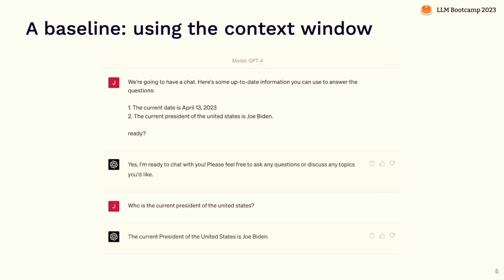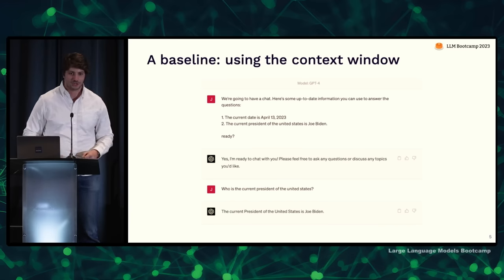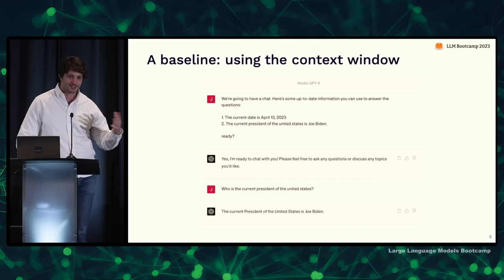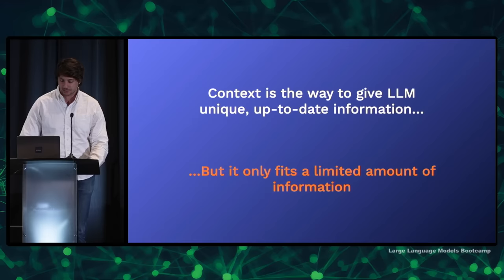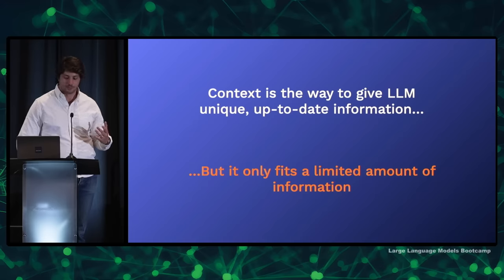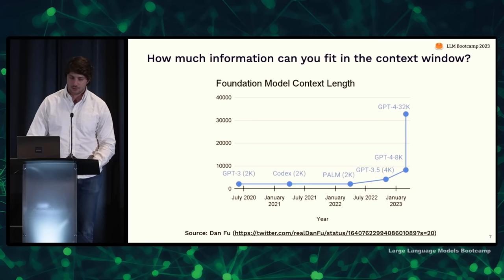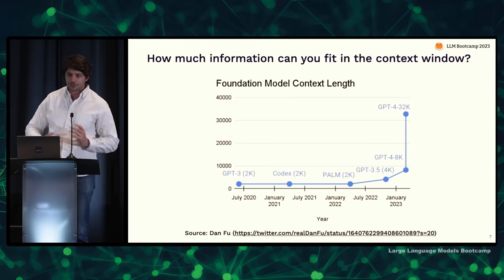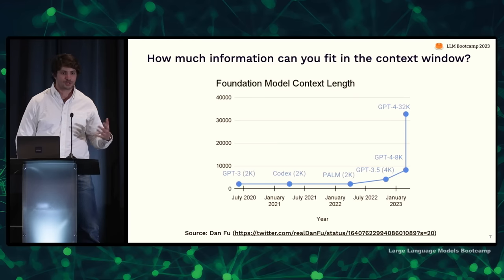The analogy here is: if the model by itself is you in high school, putting data in the context window is like when your teacher told you that you're allowed to bring a cheat sheet into the exam. You have this limited scratch pad where you can give this smart but not knowledgeable high school student access to the information it needs to answer the exam questions. Like the cheat sheet, the context window only has access to a limited amount of information.